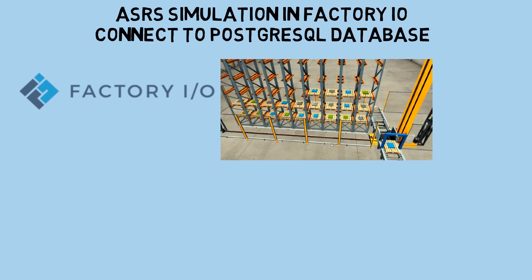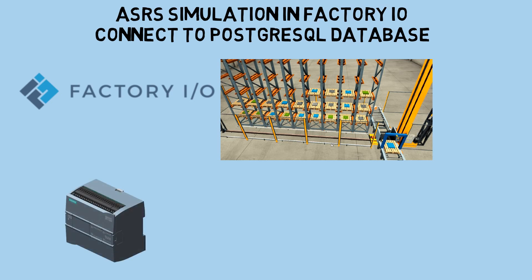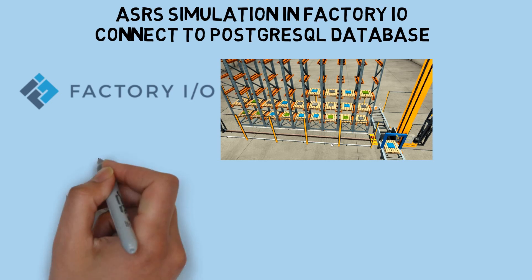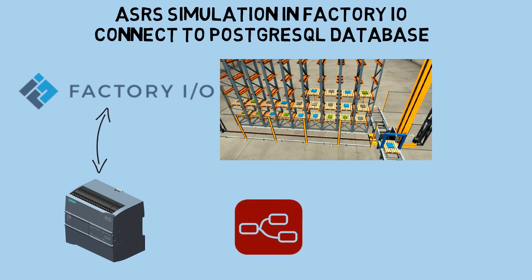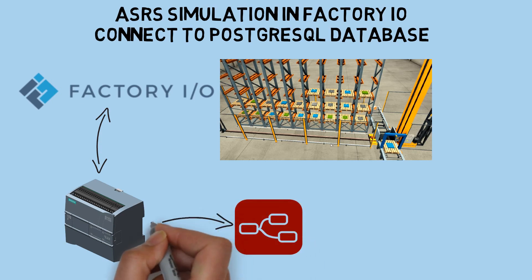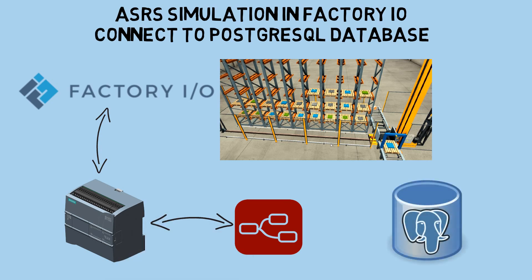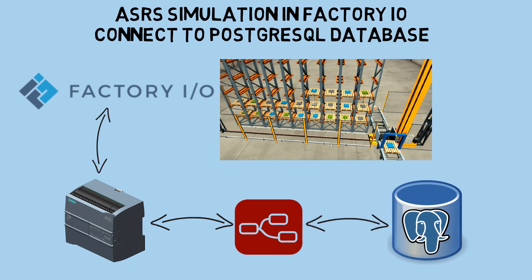In controlling the Factory I.O. Warehouse Simulation, I use a PLC Siemens S7-1200. As dashboard and ASRS software to control operation of storage and retrieving, I use Node-RED, and it is connected to PLC for reading and writing PLC tags. And as warehouse database, I use PostgreSQL, and it is connected to Node-RED.